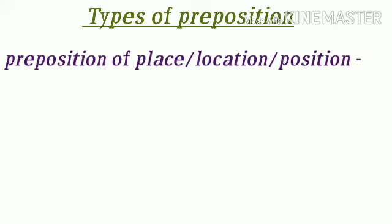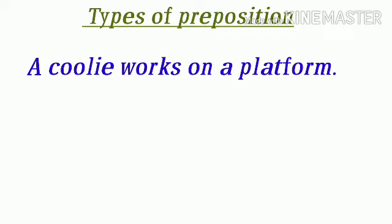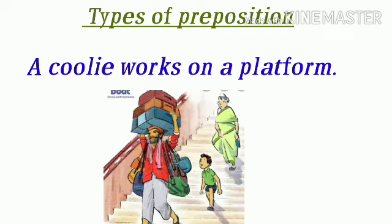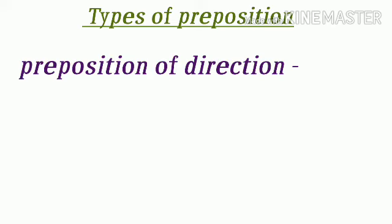Next है preposition of place, location, or position — ऐसे preposition जो किसी जगह, स्थान या स्थिति को दर्शाते हैं, जैसे in, on, by, under, over, between, inside, outside, in front of, behind, etc. ऐसे कई सारे preposition हैं जो स्थान को बताने के लिए यूज़ किये जाते हैं। जैसे: A coolie works on a platform — एक coolie एक platform पर काम करता है। Platform पर — यानी जगह बताई है — इसके लिए 'on' यूज़ किया है।